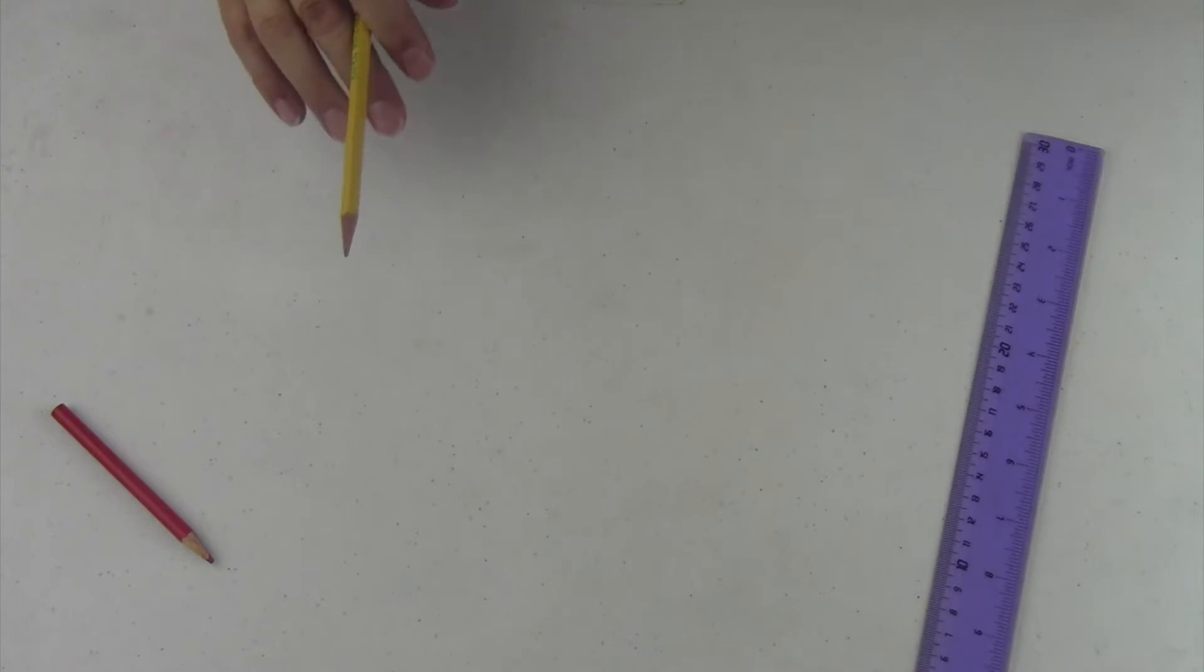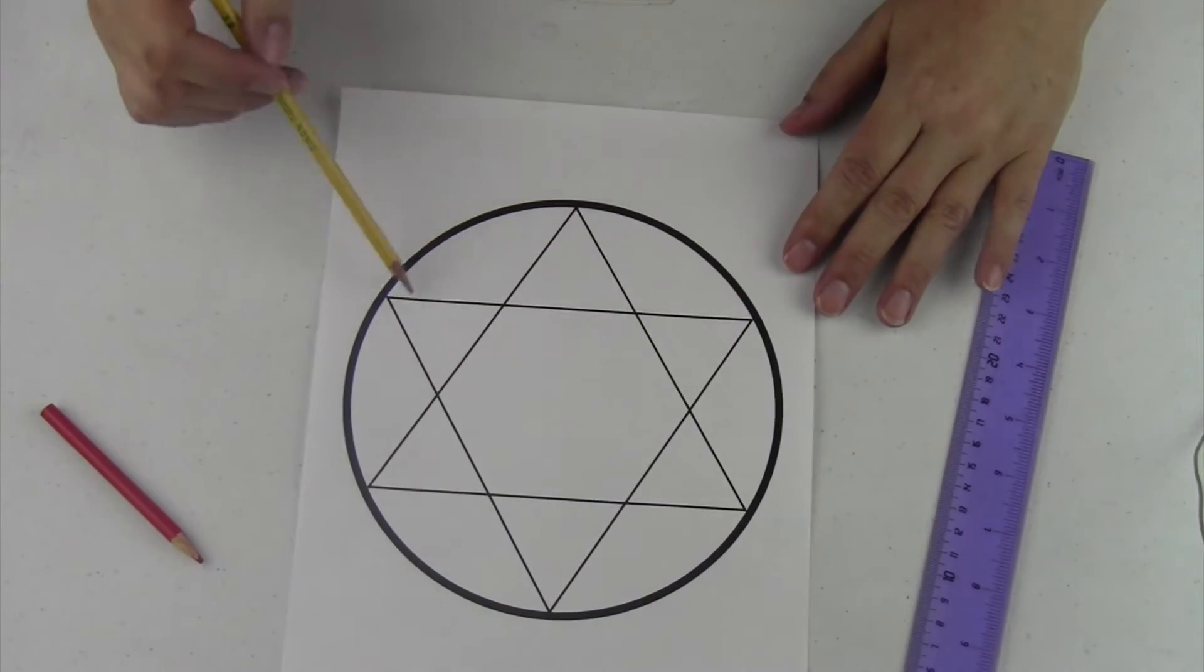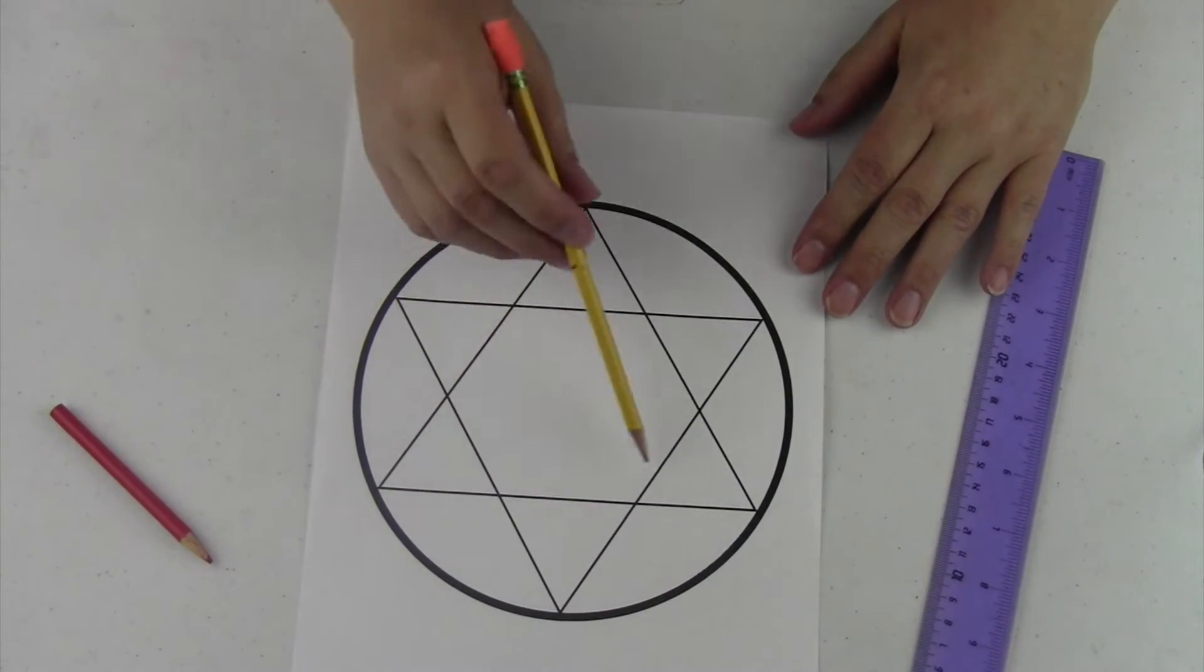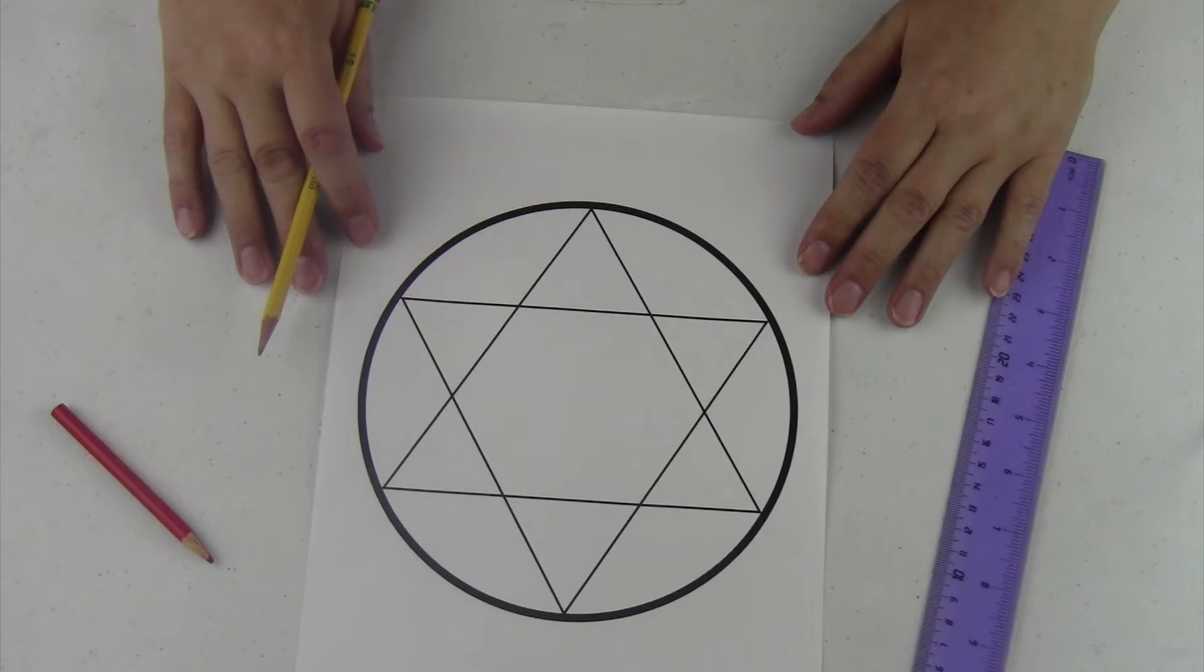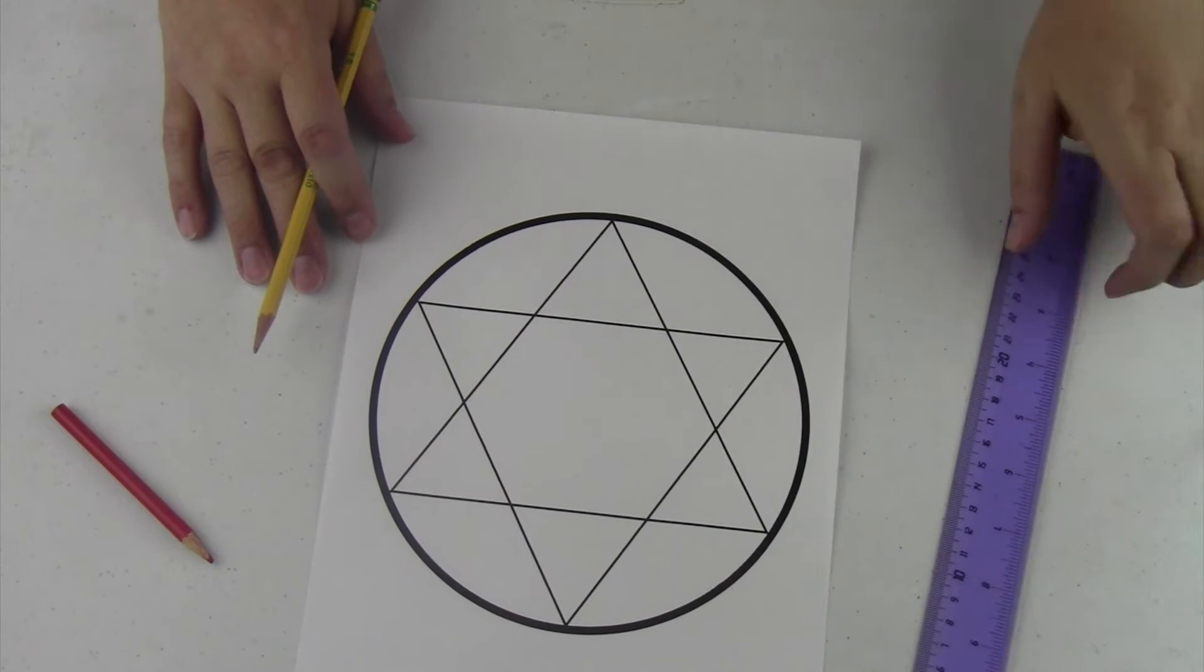I've taken the liberty to create here a larger circle with the two triangles, or the Star of David within them. This is how we're going to start our nonagon.